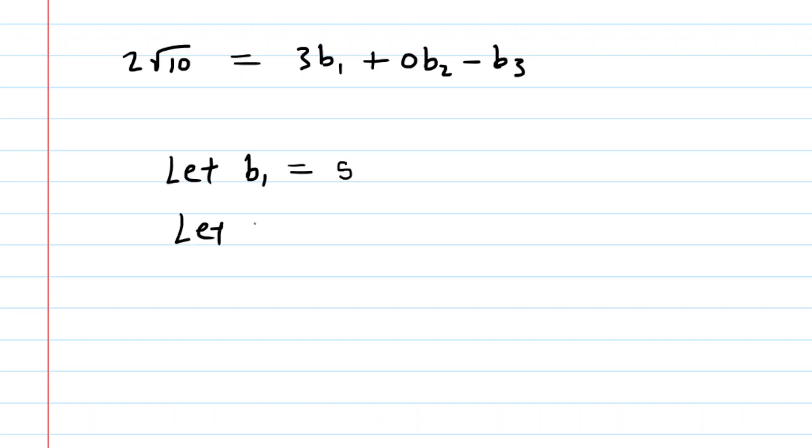Similarly, we are going to let B2 equal another arbitrary letter equal to T. So S could be any value, and T could also be any value. What we'll do is plug those in to our equation above. So we would have 3S plus 0 times this T, and then minus B3.